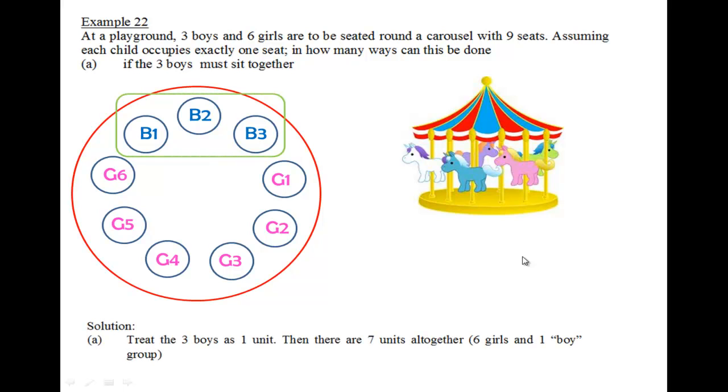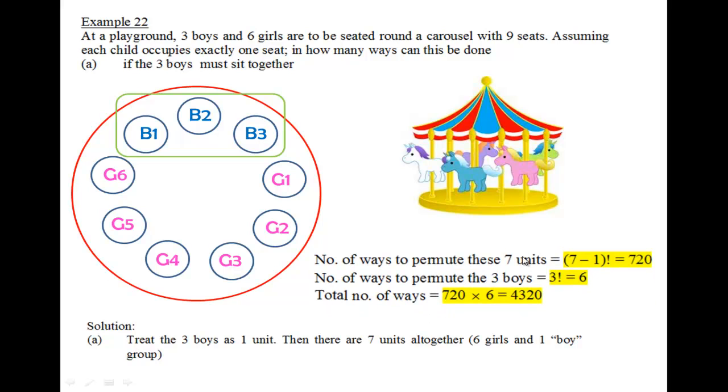So in total now we have 7 units, G1 to G6 and a group of boys. Therefore, the total number of ways to permute these 7 units will be 7 minus 1 factorial, giving us 720.